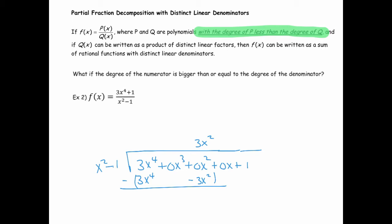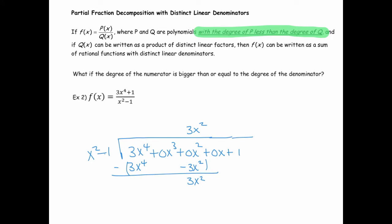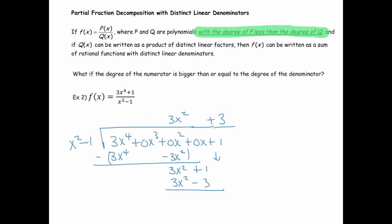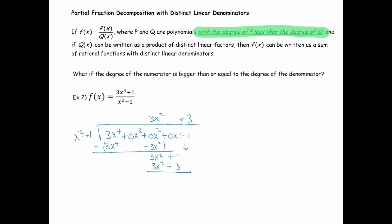So when you subtract, the leading terms go away, and then I have 0x squared minus a negative 3x squared, which gives me a positive 3x squared. And then I do it again. So what I do is bring down this 1, and think about what I'd have to multiply x squared by to get 3x squared, but that's just a 3. 3 times x squared is 3x squared. 3 times a negative 1 is a negative 3. And when you subtract, you end up getting 3x squared minus 3x squared is 0x squared. 1 minus a negative 3 is a 4.